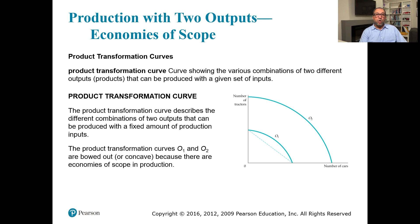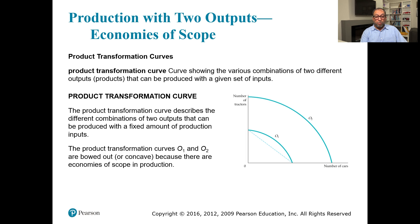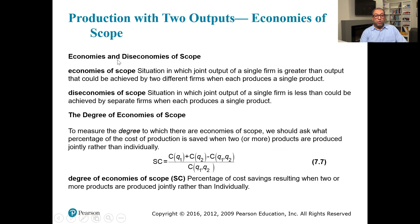When we talk about production with two outputs and economies of scope, we first look at the product transformation curve — showing the various combinations of two different output products that can be produced with a given set of inputs. The curve is bowed out or concave because there are economies of scope in the production process.